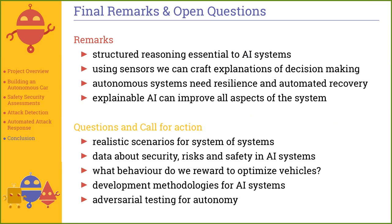To conclude: structured reasoning about the system allows us to reason about attacks on these traditional black-box sensors using explanations to help reason about the system. Autonomous systems need resilience and automated recovery to react autonomously to attacks and threats. Our call to action: we need more realistic scenarios for systems of systems - sensors, braking systems, and control from real vehicles. Data is always needed. We'd like to discuss what behavior to reward to optimize vehicles, not only in terms of reactive decision-making but also how to react to threats, and to develop new testing approaches for autonomy. Any suggestions are more than welcome.